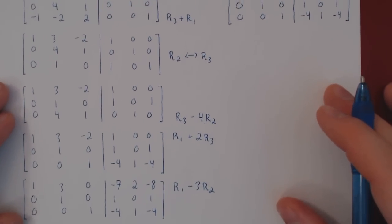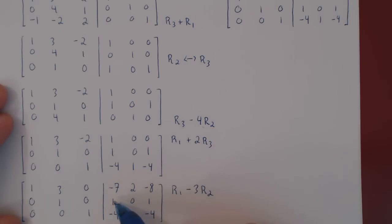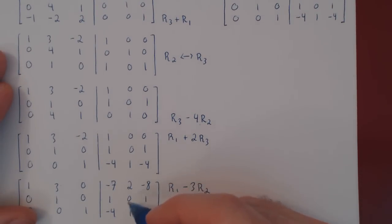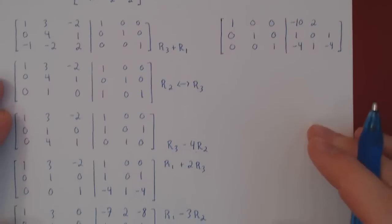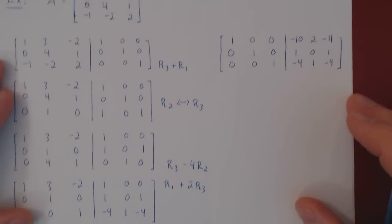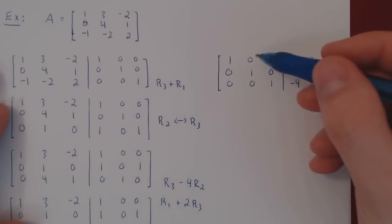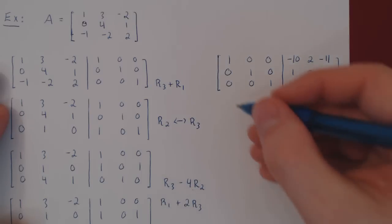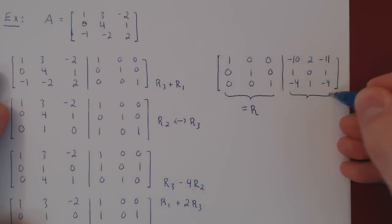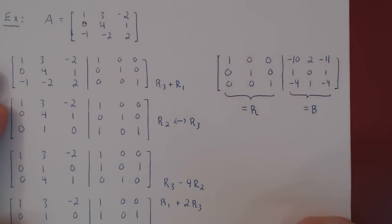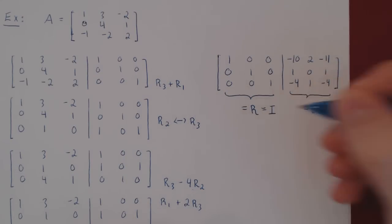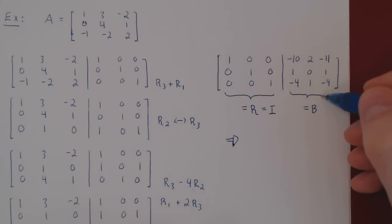And finally, completing row 1 on the right side: -7-3(1)=-10, 2-0=2, -8-3(1)=-11. We are done with the row reduction. This is the reduced row echelon form of matrix A — this is R — and this is B, what happened to I. The reduced row echelon form of A is I, and so indeed A is invertible and B is A inverse.